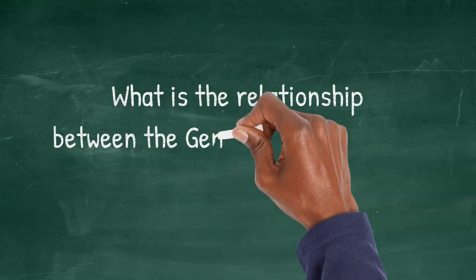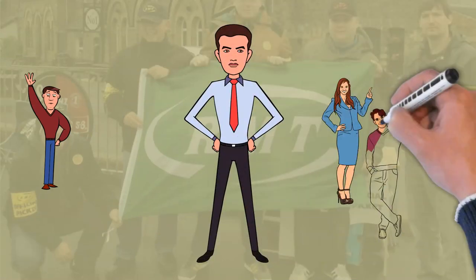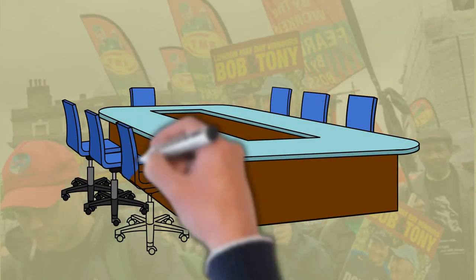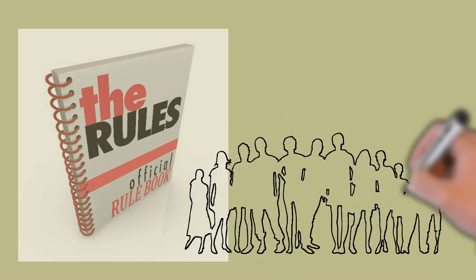What is the relationship between the General Secretary and the National Executive Committee? The General Secretary is a non-voting member of the National Executive and a member of all its subcommittees. The General Secretary convenes and keeps records of National Executive meetings and obeys the instructions of the National Executive Committee.